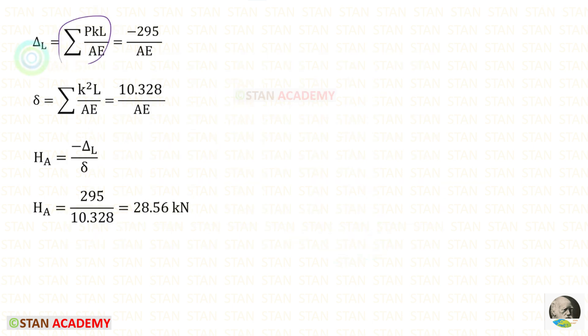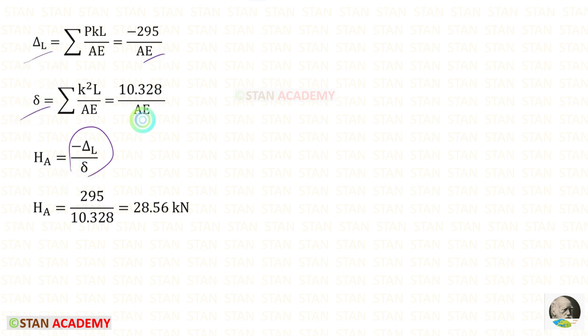This is the formula to find delta_L and delta. Since nothing is mentioned about area or Young's modulus, we assume they are the same for all members, so AE cancels out. Applying the summed values, for H_A we get 28.56 kN. We got a positive value, which means our assumed direction (rightward) is correct.